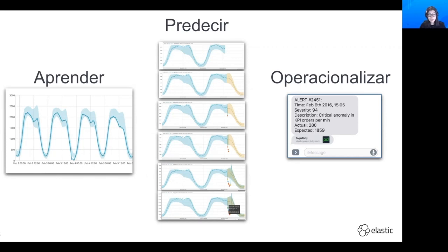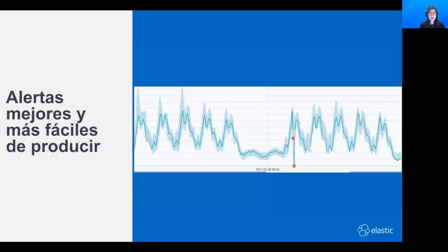El trabajo de detección de anomalías aprende y crea modelos estadísticos a partir de datos de series de tiempo para identificar patrones y calificar los datos utilizando algoritmos de probabilidad. Buscamos excepciones al modelo y usamos un método de puntuación para informar y alertar. Cuando se encuentra un valor anormal o una anomalía, se califica según qué tan grande sea la variante. Las anomalías tienen una calificación entre 0 y 100, categorizada desde warning o advertencia hasta severe o severo. También podemos indicar cuáles otras métricas podrían haberse sumado a eso, lo que quizás influyó en esa anomalía.